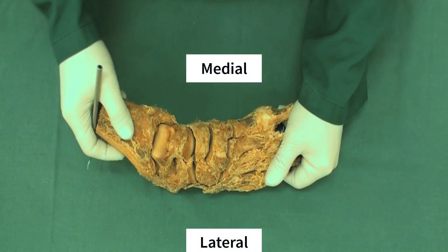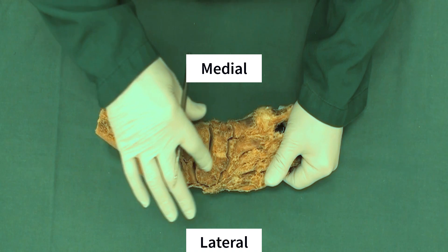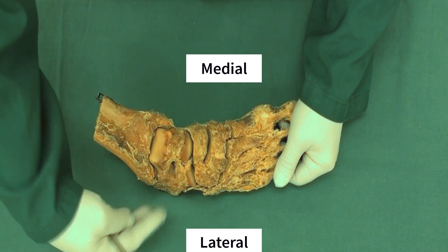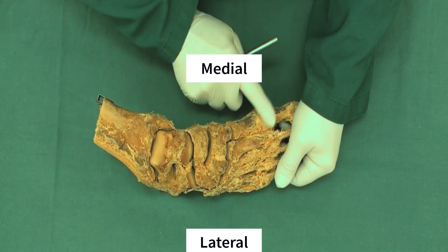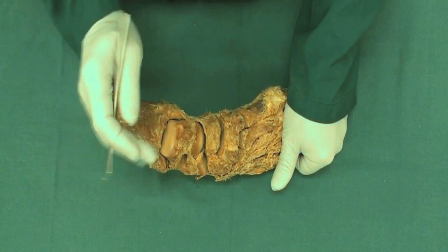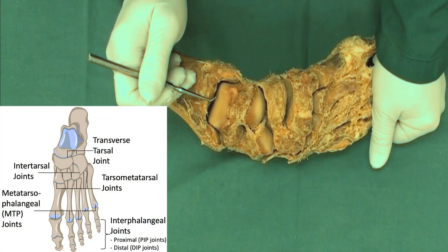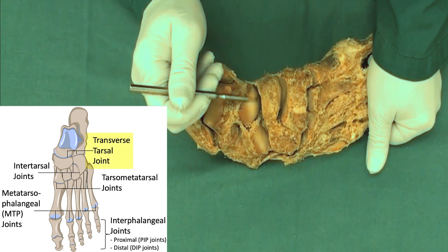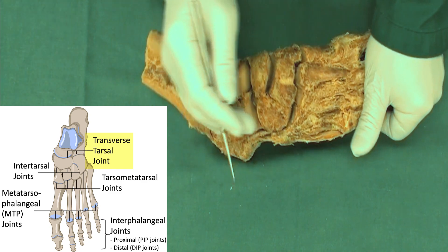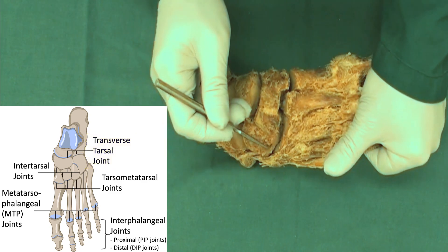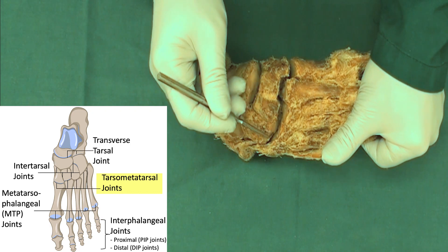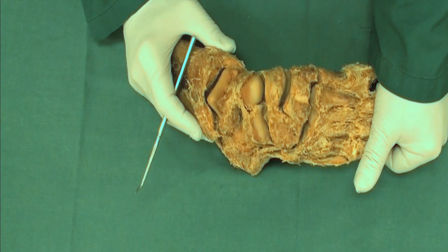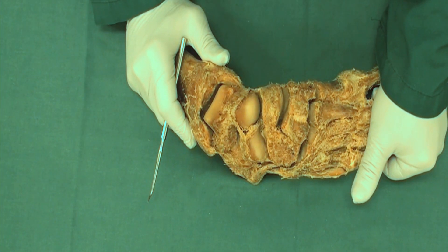In this older specimen I would like to walk you through the other joints of the foot that have been opened. For orientation: that's the medial side, the tibia, and the big toe. Zooming in, we can see the joint spaces: here is the ankle joint, then the transverse tarsal joint, and then the tarsometatarsal joint between the tarsal bones and metatarsals.